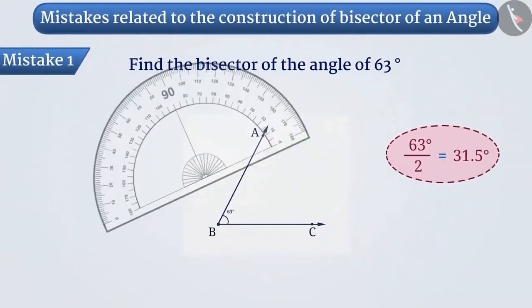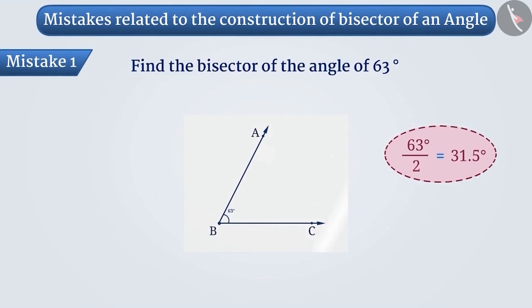In such a situation, we can find the bisector easily and accurately by drawing an angle of 63 degrees and creating a bisector using the compass.